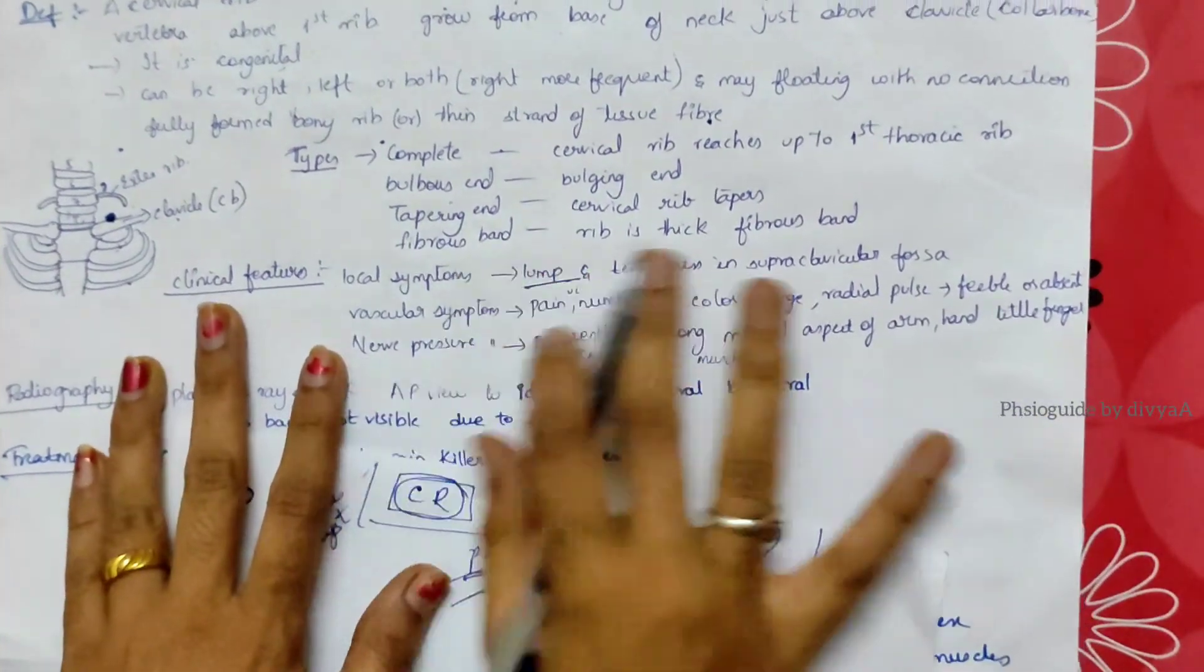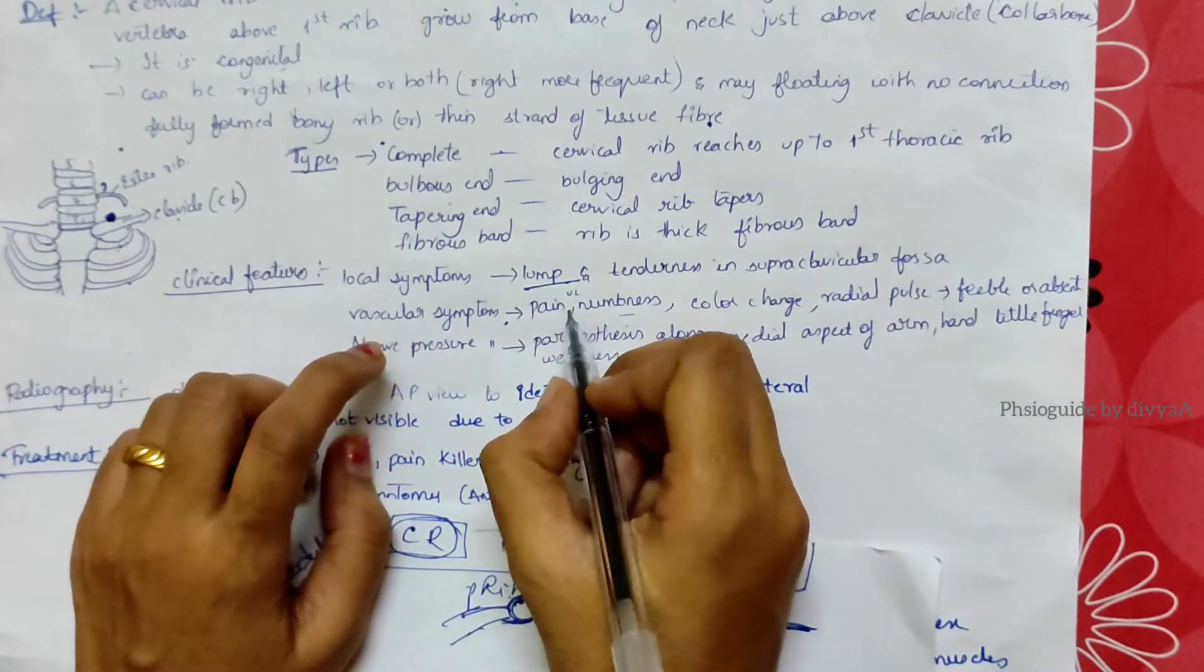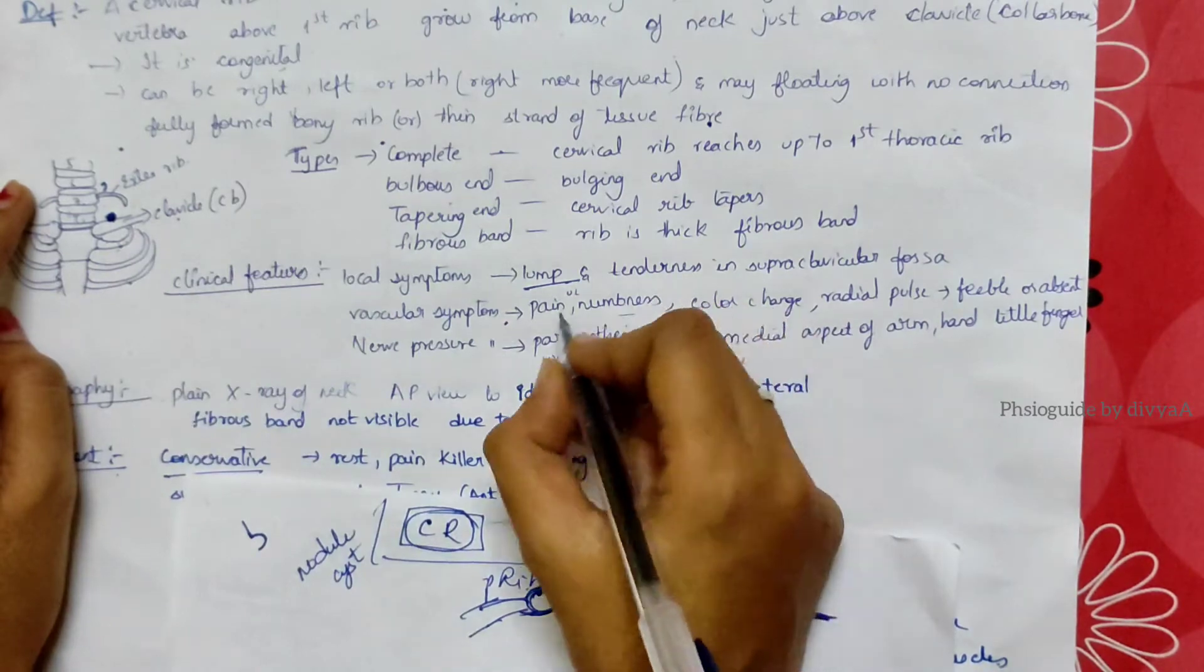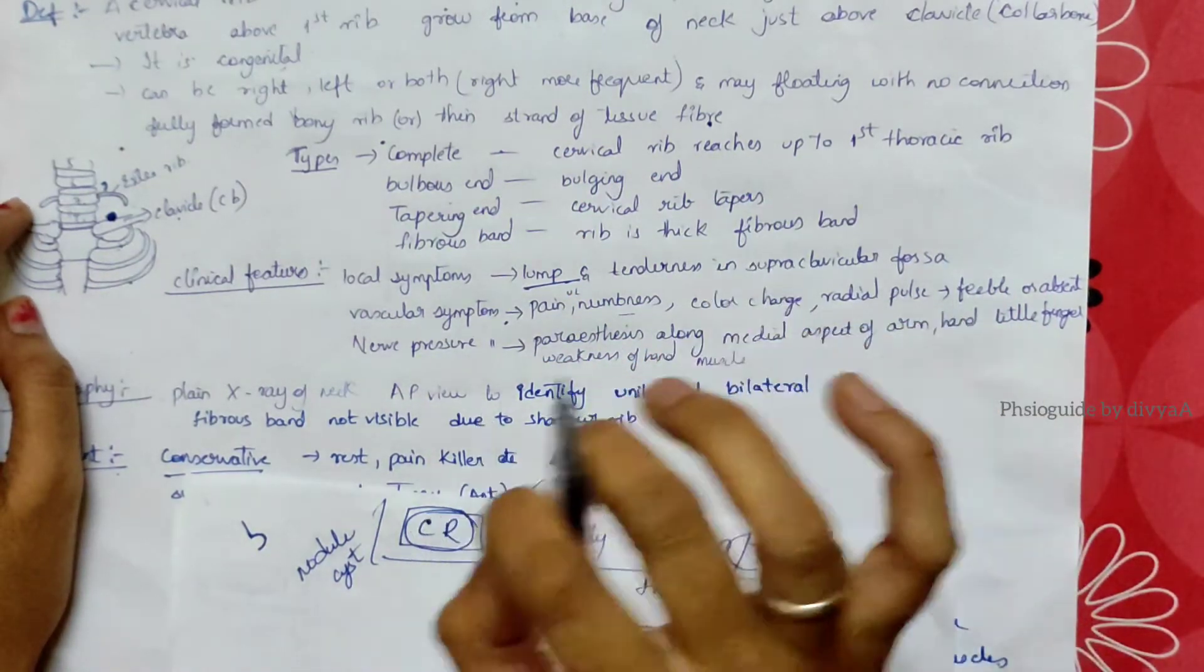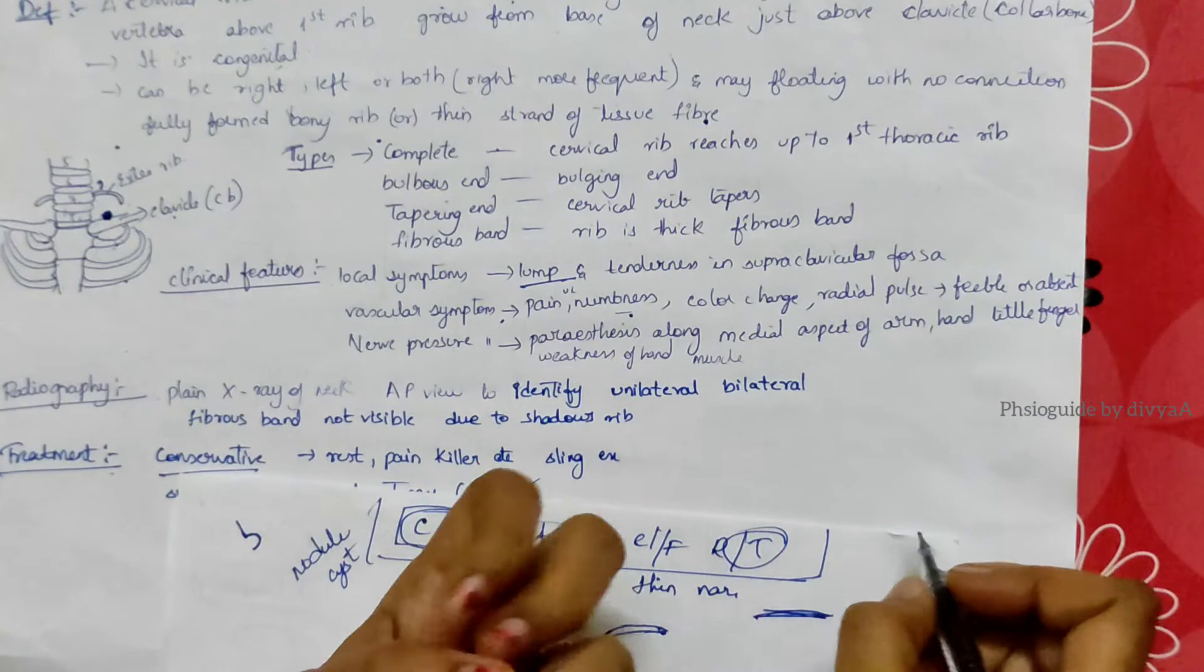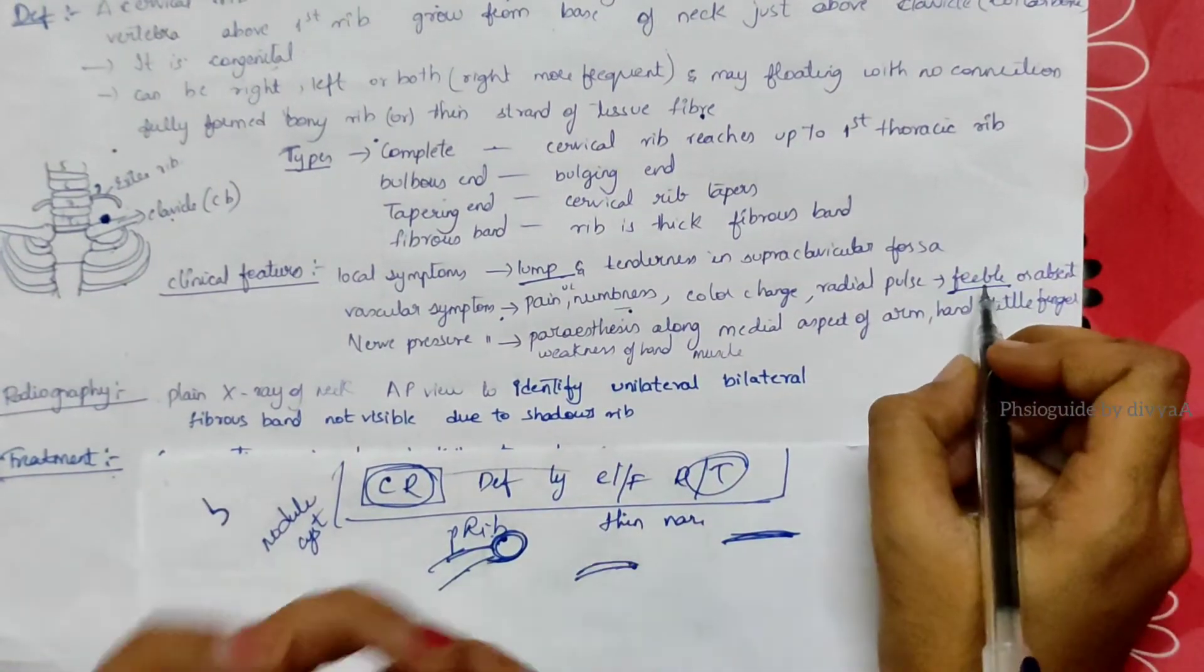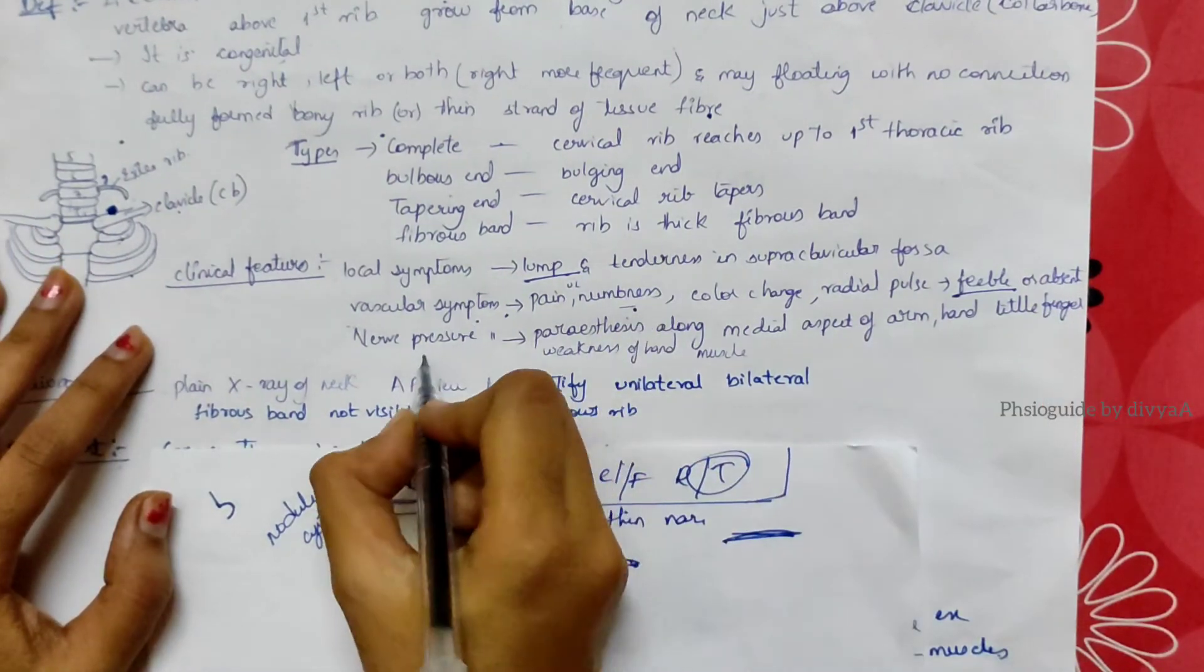What are the vascular symptoms? There will be pain in the upper limb, numbness meaning no sensation in that area, color change, and radial pulse will be feeble or absent. Feeble means weak or low, so the radial pulse will be low or weak.